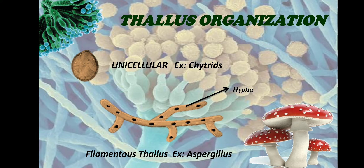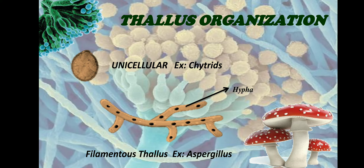Since the name is unicellular — "uni" means one — they are single-celled structures. An example is chytrids. The multicellular fungi is called a filamentous thallus because they are filamentous in nature.